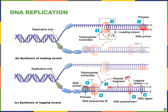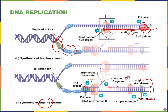Looking at a second diagram, we can see the same enzymes: helicase at the replication fork, single-stranded binding proteins, the primer placed by primase on the leading strand, and DNA polymerase III growing the daughter strand 5' to 3'. On the lagging strand, DNA polymerase III forms an Okazaki fragment, then DNA polymerase I removes the primer and replaces it with DNA, and these fragments continue to be made and will be sealed by ligase.